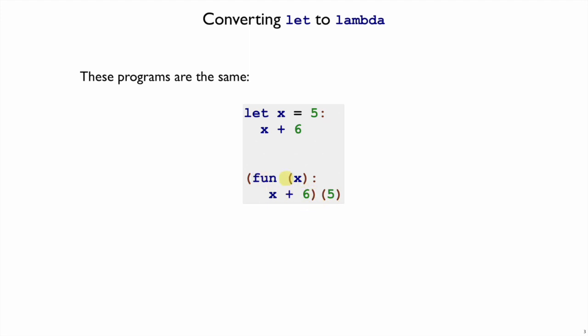And this function call looks a little weird because of the way it's broken up. Just put it all in one line to make it look a little bit easier to read. We see that 5 goes in for x now and x plus 6, and these are the same.